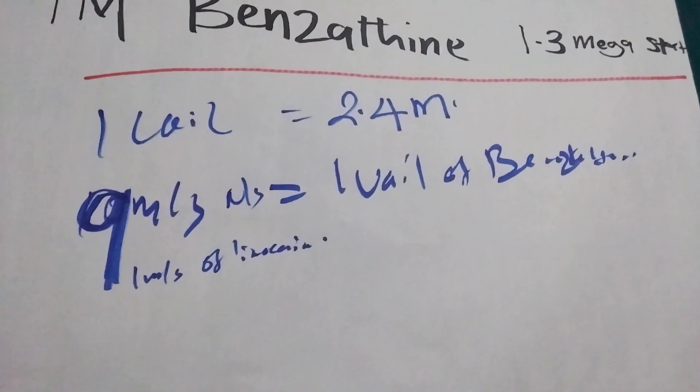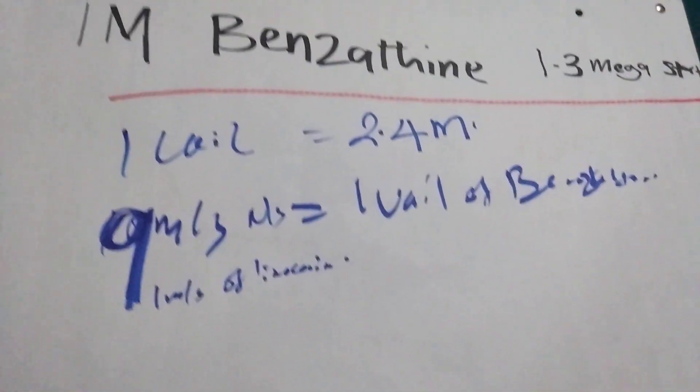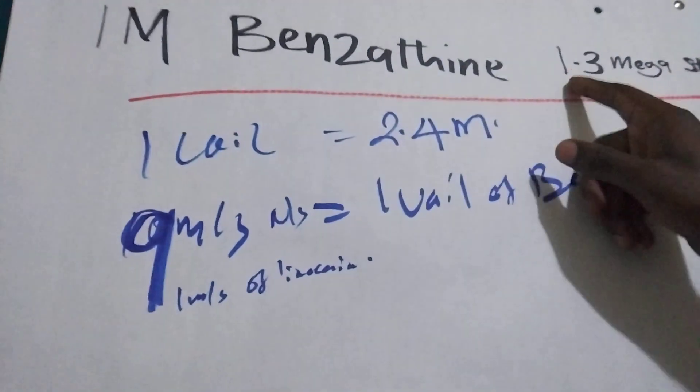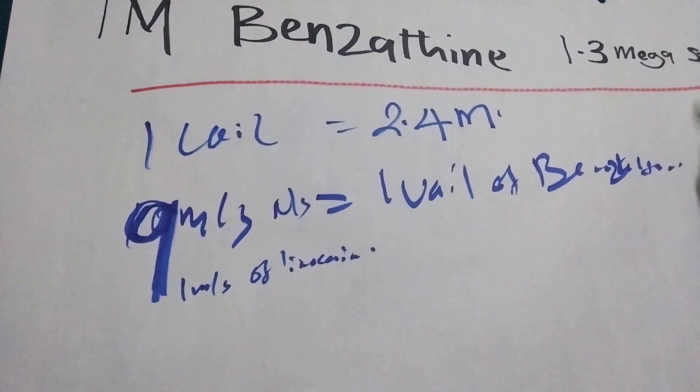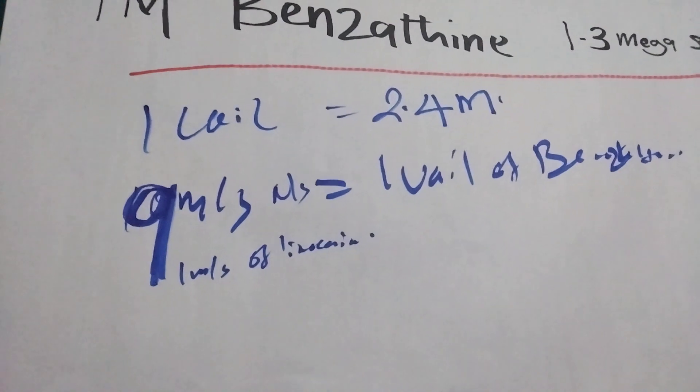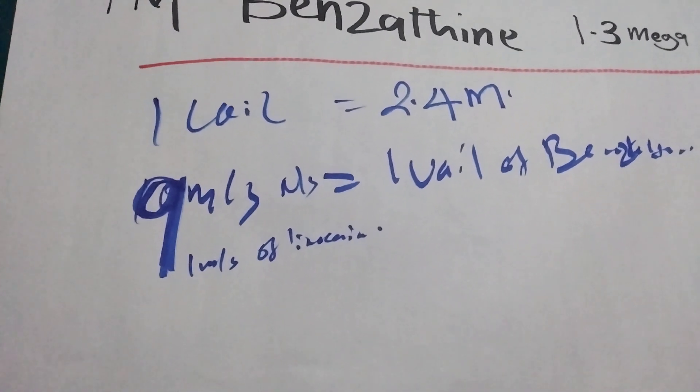Welcome back guys. Today I'm going to show you how we can give this prescriber amount. I am benzathine 1.3 mega stat. Stat means we are going to give only once, we are not going to give poison.